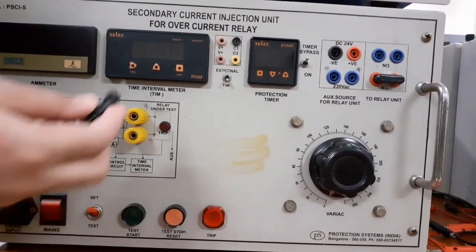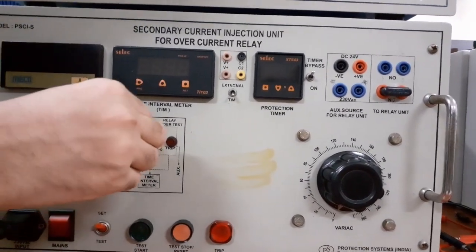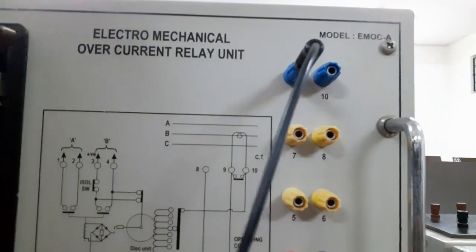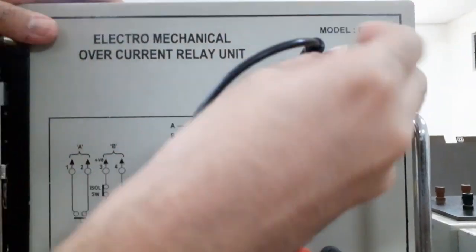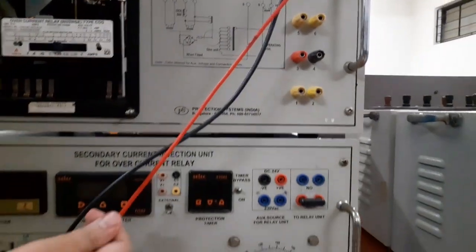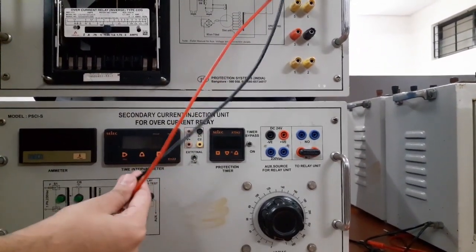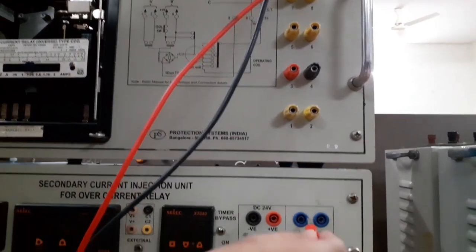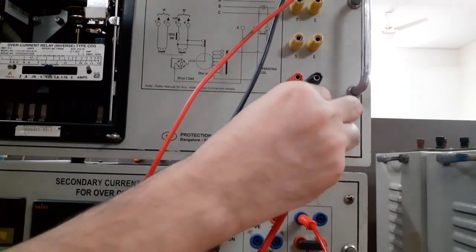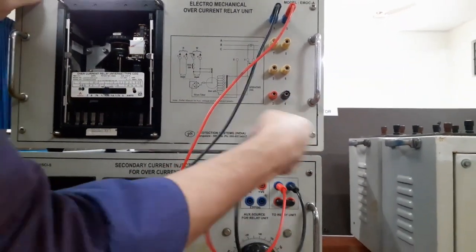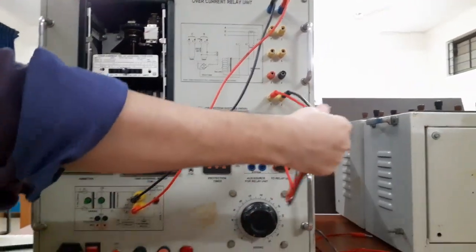Let us do the connection. First, let us make the CT connection from here to here, and the next point has to be connected. This segment has been completed. Now I would like to complete the tripping circuit. You can see the tripping circuit here. This is actually a normally open contact. Likewise, this point has to be connected to here. The tripping circuit has been completed.